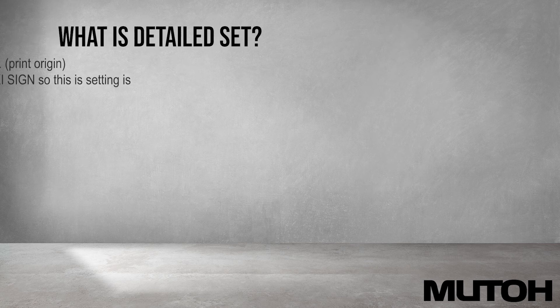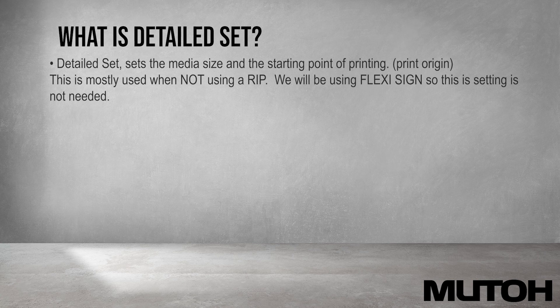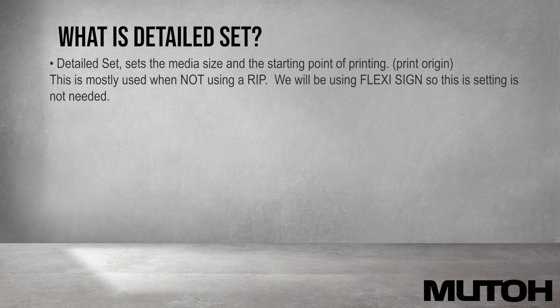First, let's talk about what is Detailed Set. Detailed Set sets the media size and the starting point of printing, also known as the print origin. This is mostly used when not using a RIP. We will be using FlexiSign, so this setting is not needed.